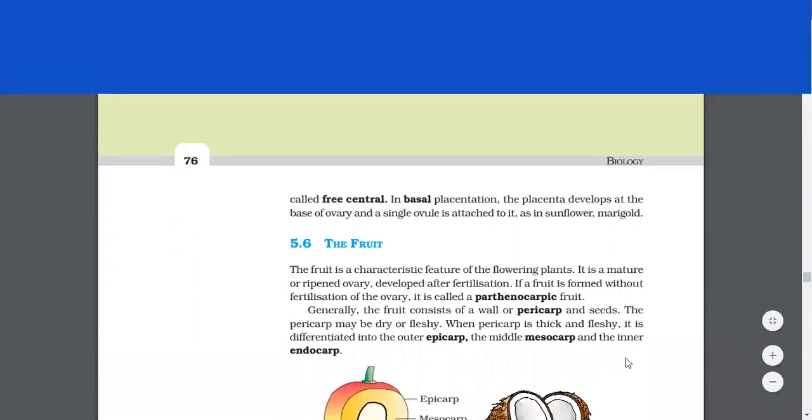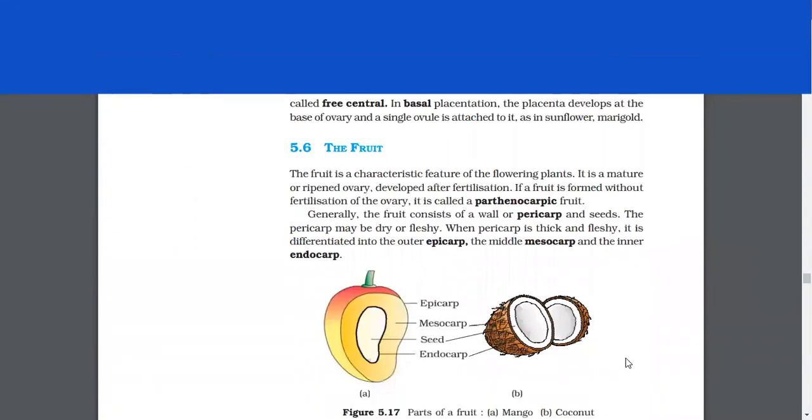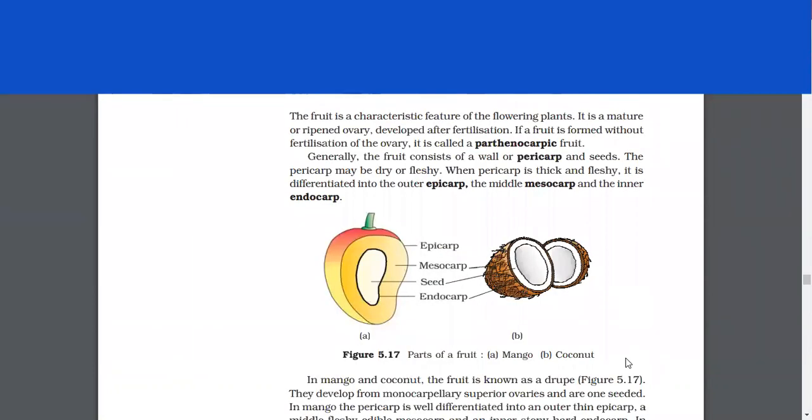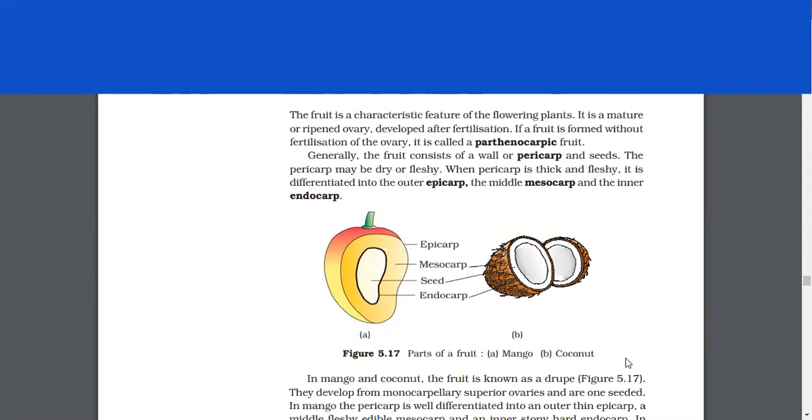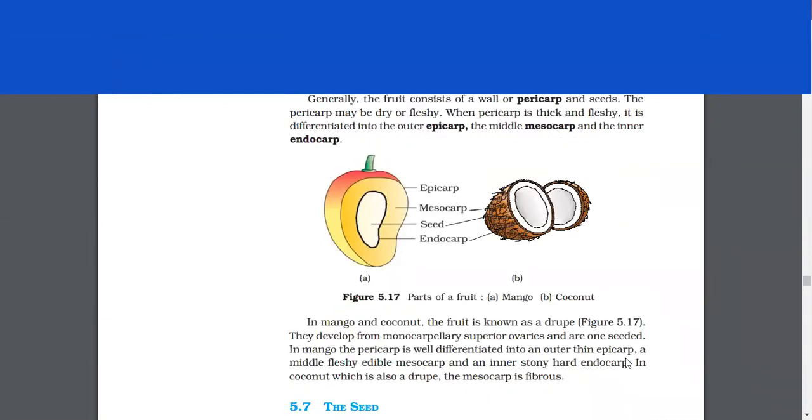The fruit. The fruit is a characteristic feature of the flowering plants. It is a mature or ripened ovary developed after fertilization. If the fruit is formed without fertilization of the ovary, it is called parthenocarpic fruit. Generally, fruit consists of a wall or pericarp and seeds. The pericarp may be dry or fleshy. When pericarp is thick and fleshy, it is differentiated into the outer epicarp, the middle mesocarp, and the inner endocarp.